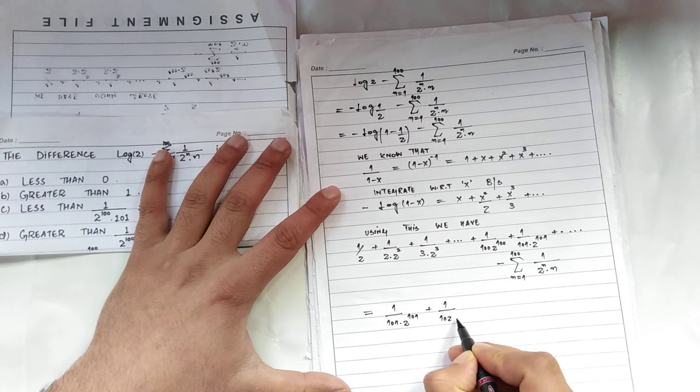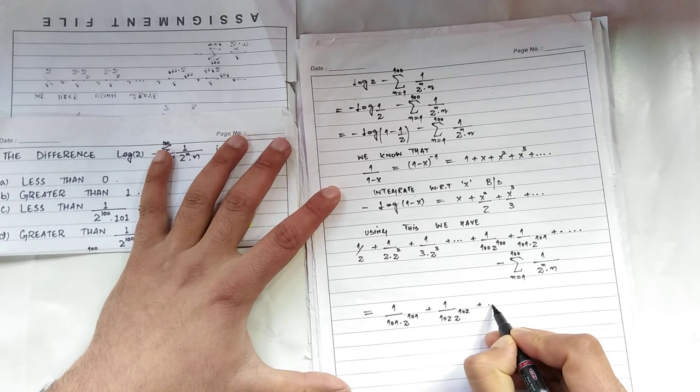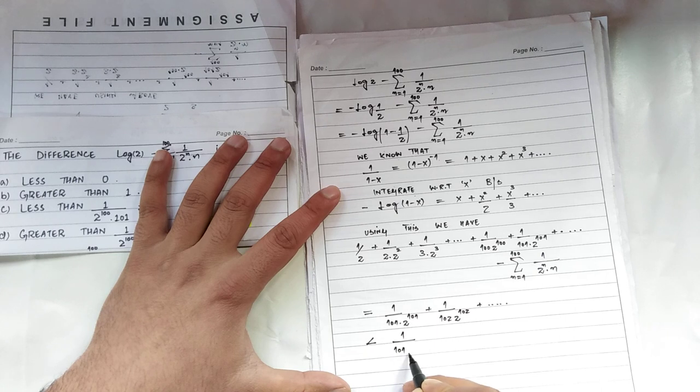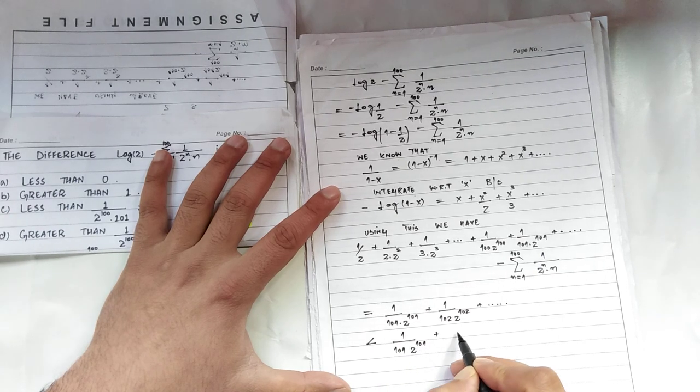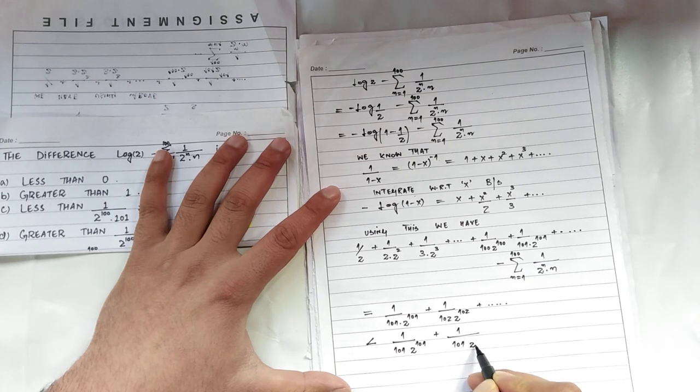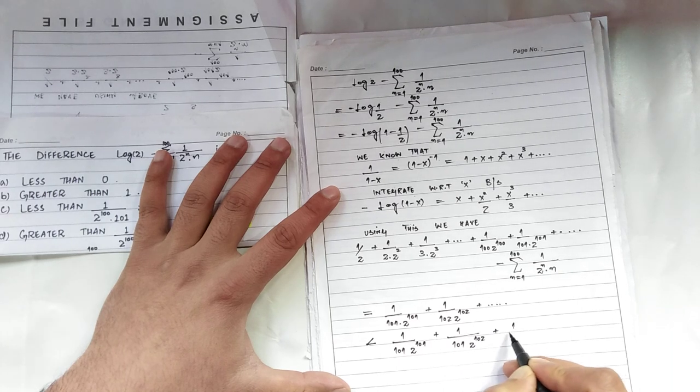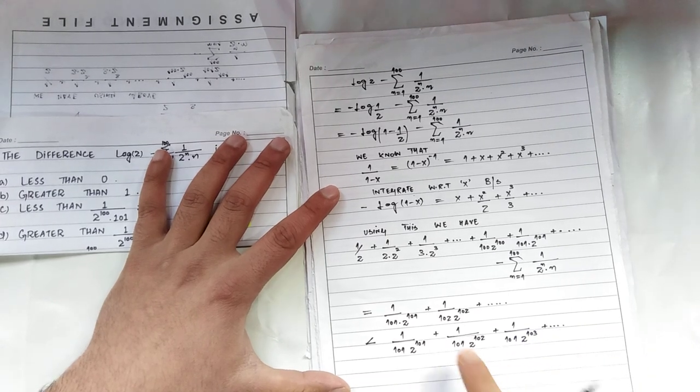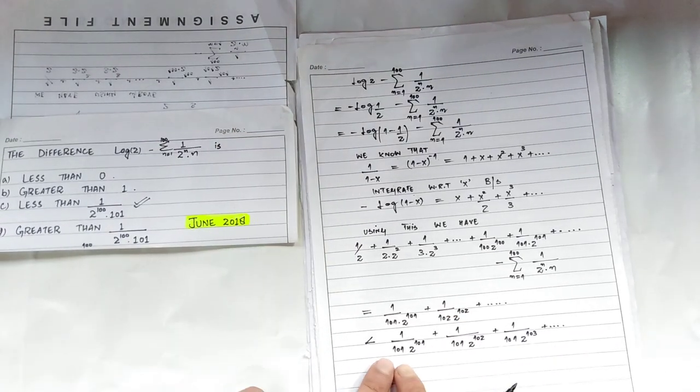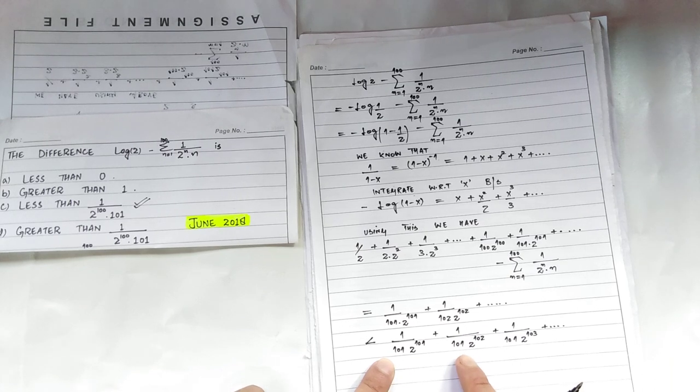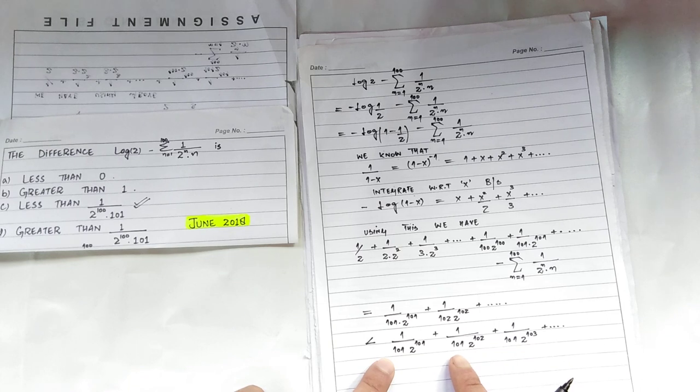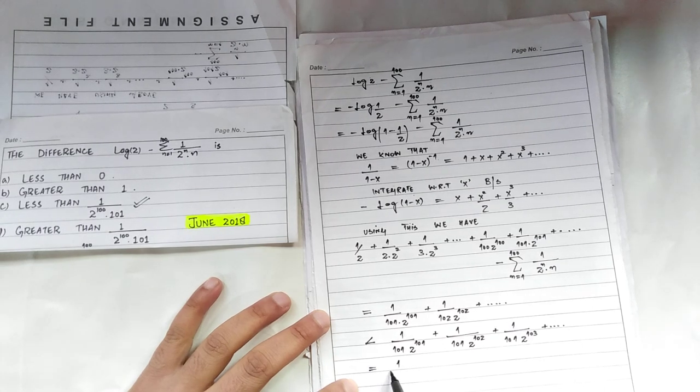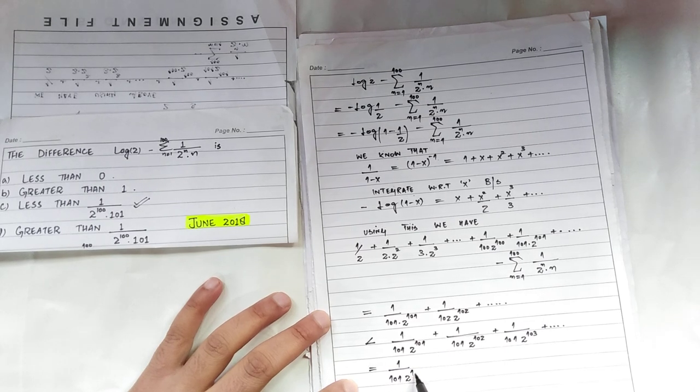Now have a look. I am writing this quantity less than another quantity because I have decreased the denominator. This quantity is greater than that quantity because the denominator is less than that one. So I can just take 1 over 2 power 101 common, so I am left with 1 plus 1 by 2 plus 1 upon 2 square plus so on.